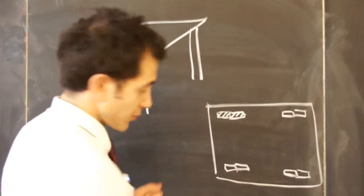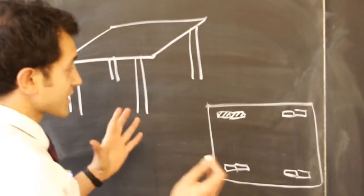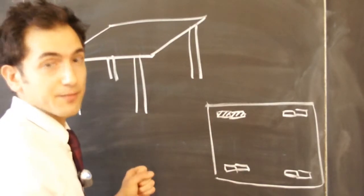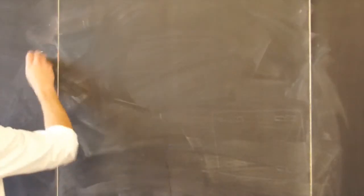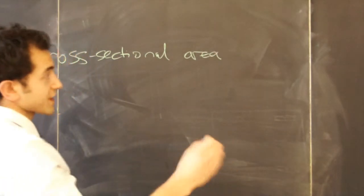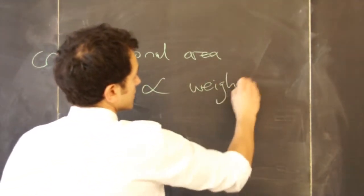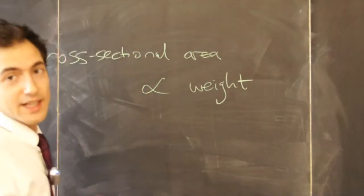So what we've decided, what feels right, is that the cross-sectional area tells you how much load a leg can carry. In words, the cross-sectional area is directly proportional to the weight that that leg can hold.